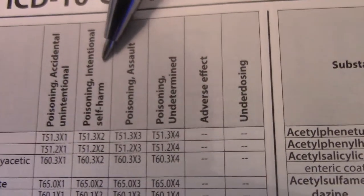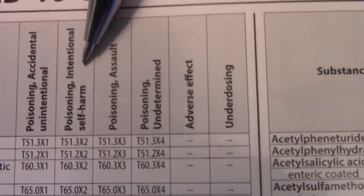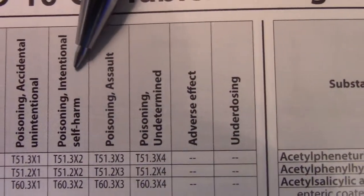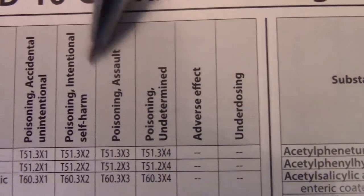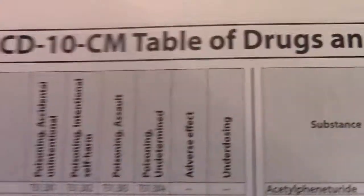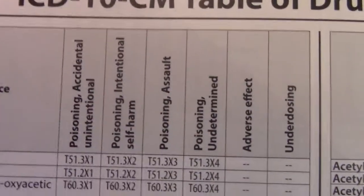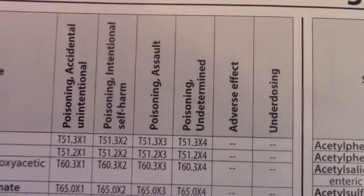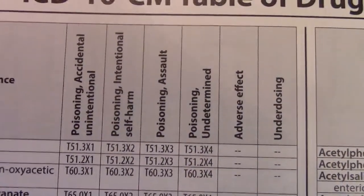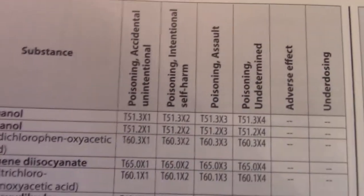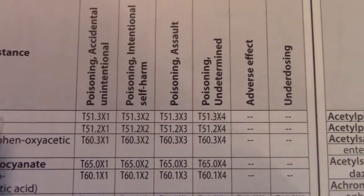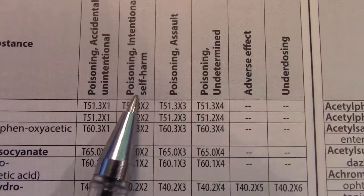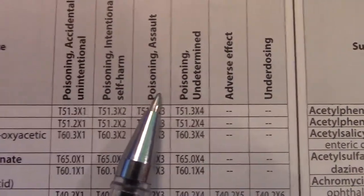The second column says poisoning, intentional self-harm. We have patients that are trying to commit suicide or hurt themselves in one way or another. So we identify that substance first and use the code pertaining to self-harm if they're trying to harm themselves.